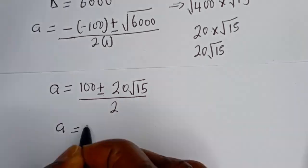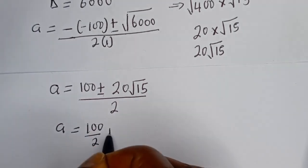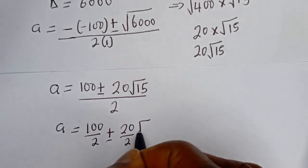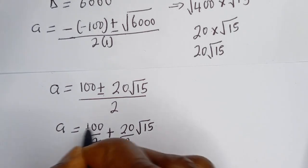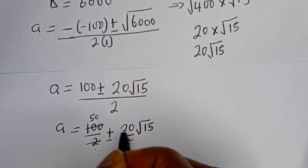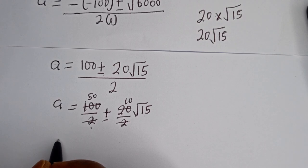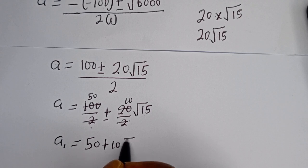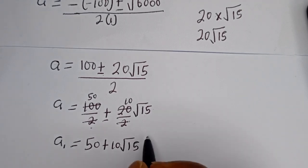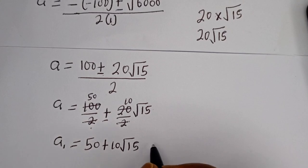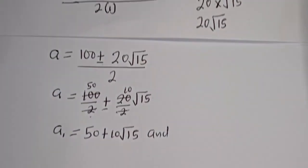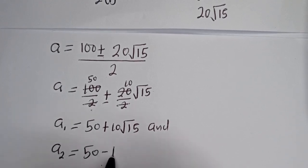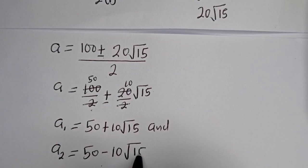Then A is equal to 100 over 2, plus or minus 20 over 2 times root 15. So A1 is equal to 50 plus 10 root 15, and A2 is equal to 50 minus 10 root 15.